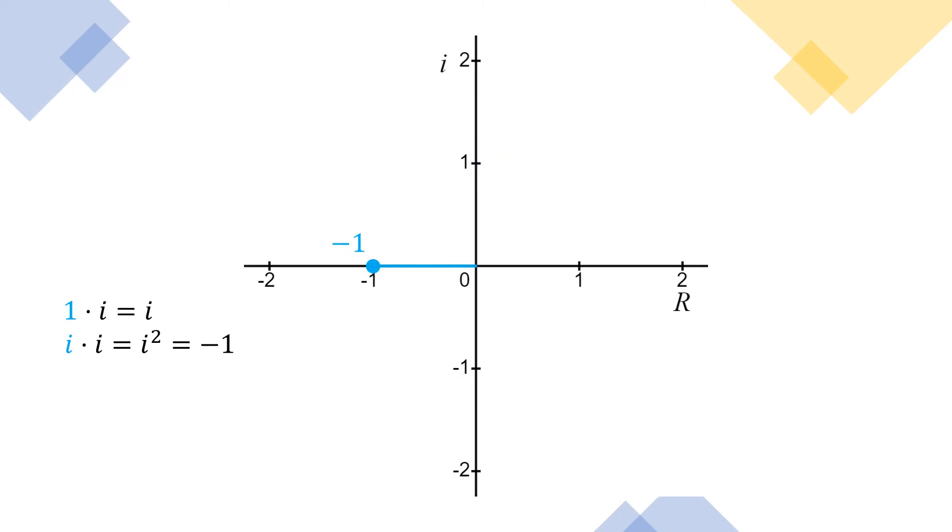And this will put us to the left of the origin on the real number axis again, another rotation counterclockwise of 90 degrees. So let's multiply by i yet again and negative one times i is negative i. And that will put us below the origin along the imaginary axis again. And finally, negative i times i is negative i squared, which is positive one, which takes us right back to where we started. So four counterclockwise 90 degree rotations takes us all the way around and back to where we started.